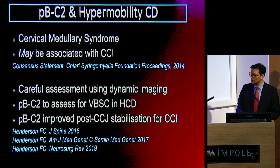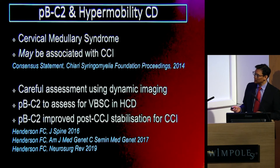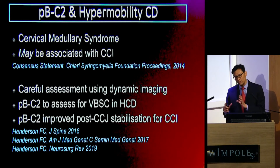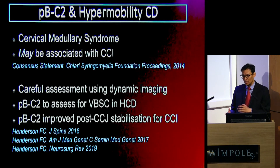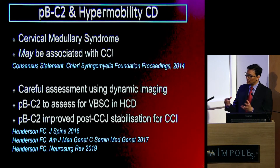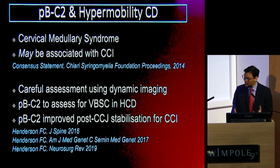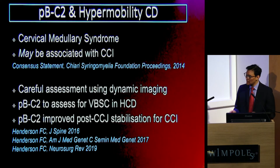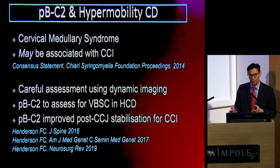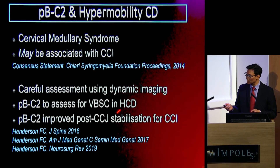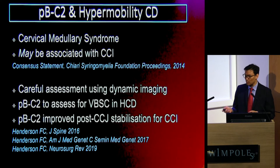This may be associated with cranial cervical instability. Remember that the Grabb-Oaks measurement is not really a measure of instability as such, but of ventral spinal cord compression — so the two have been drawn together. More recent publications have reflected a need to take a more dynamic approach to cranial cervical instability, and to advocate the use of the Grabb-Oaks measurement in ventral spinal cord and brainstem compression in hypermobile patients.